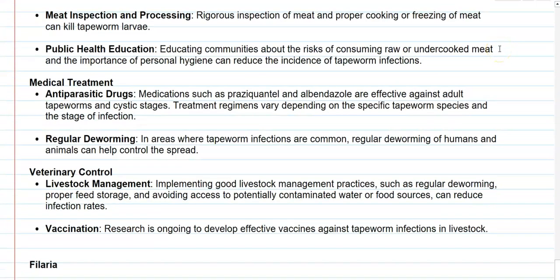The next mechanism is veterinary-based control of this particular pathogen. First is livestock management: implementing good livestock management practices such as regular deworming for livestock and using proper feed storage — avoiding feeds that may be contaminated with feces or contaminated water sources — can drastically reduce tapeworm infections in animals. Regular vaccination could also help lower tapeworm infections in livestock.